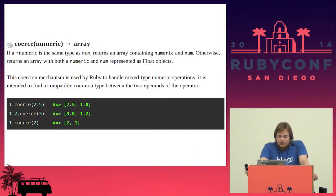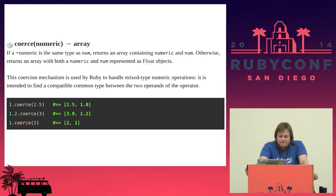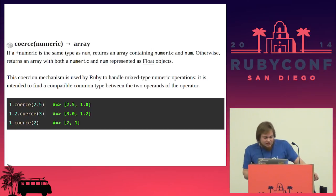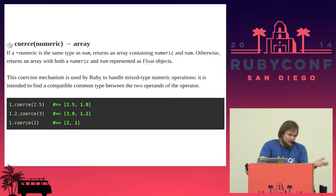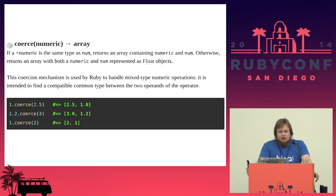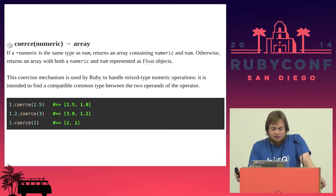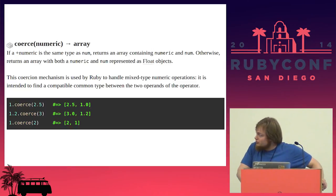We do some Googling and eventually get to the RubyLang.org core docs for coerce on 2.1.2. The text is kind of useless — it doesn't really tell you a lot — so here's the TL;DR. When you send the coerce message to a numeric object with Y as the argument, Ruby expects the coerce method to return an array of two elements, and it expects these elements to be compatible. The code samples are the actual useful portion of this documentation.